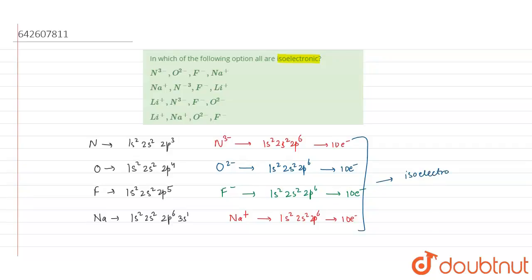Isoelectronic means same number of electrons. So our correct option is option A. Thank you.